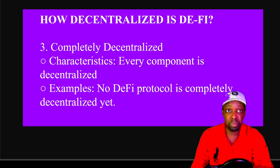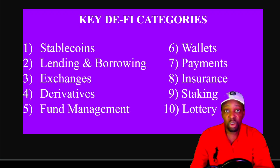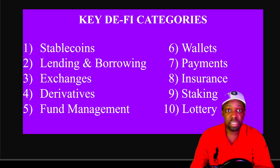Now we move to the key DeFi categories. The ten categories I find important are: stable coins, lending and borrowing, exchanges, derivatives, fund management, wallets, payments, insurance, staking, and lottery. At bare minimum you need a wallet, then probably a stable coin, and a cryptocurrency to use on these blockchains. Hopefully all these platforms will have insurance eventually.